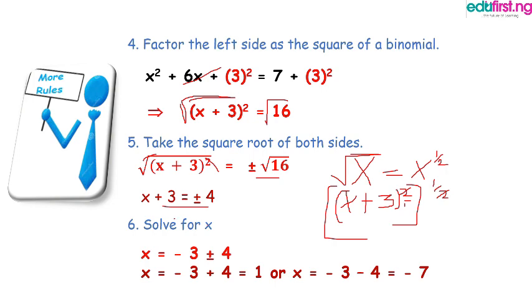So the two answers are -3 + 4 = 1, that's number one. Then the second part is x = -3 - 4, which is -7. So our answer becomes 1 or -7.